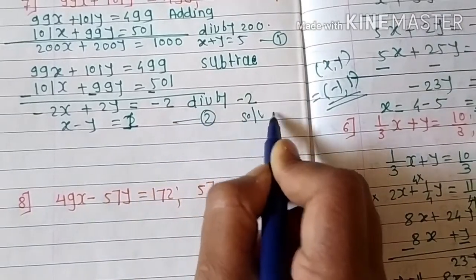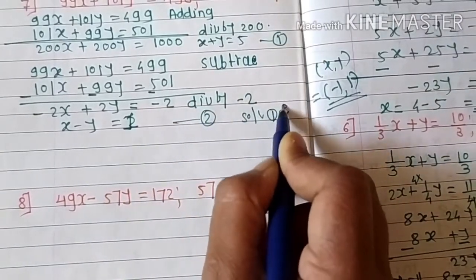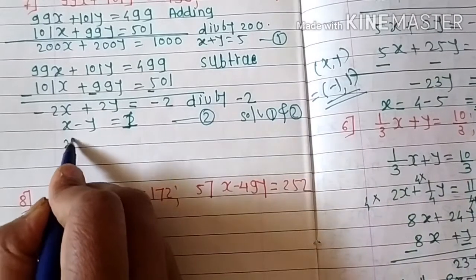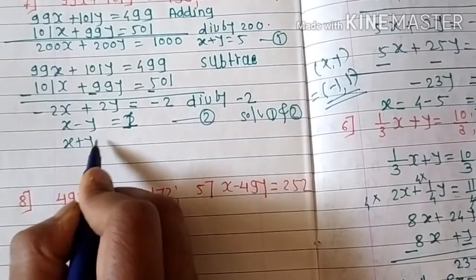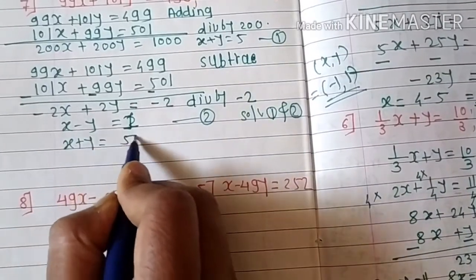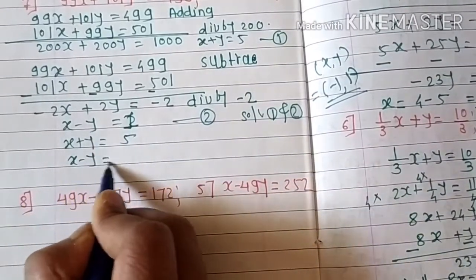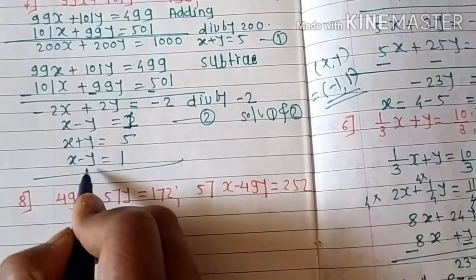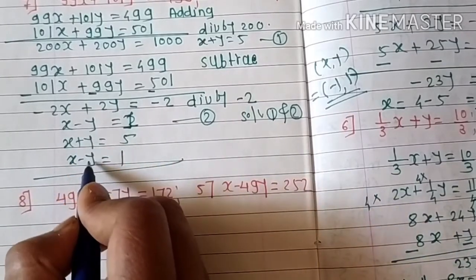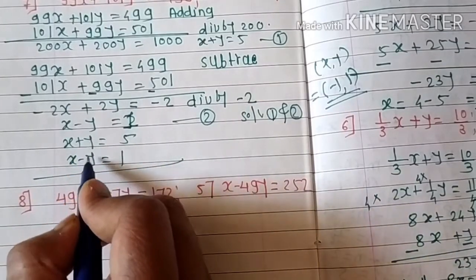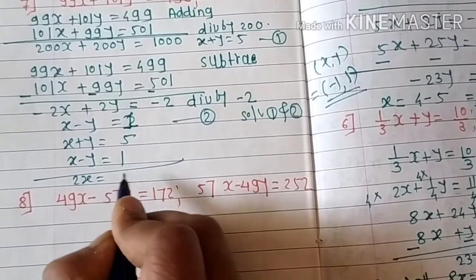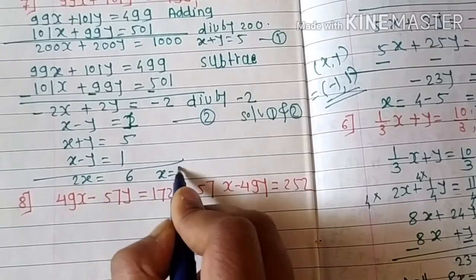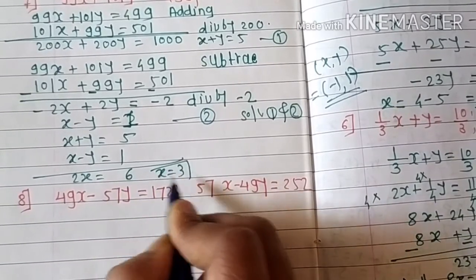Solving equations one and two: x plus y equals 5 and x minus y equals 1. Adding these two equations, y and minus y cancel, giving 2x equals 6, so x equals 3.